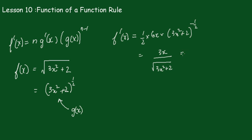Tidying that all up, we get 3x all over the square root of 3x² + 2. It's quite OK to leave it in the form (3x² + 2) to the minus one half as well. Both forms are acceptable.